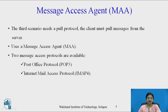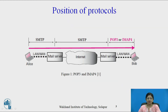There are two message access protocols used as a message access agent. The first one is Post Office Protocol, that is POP3, and Internet Mail Access Protocol, that is IMAP4. Now look at this diagram, which shows the position of these two protocols.